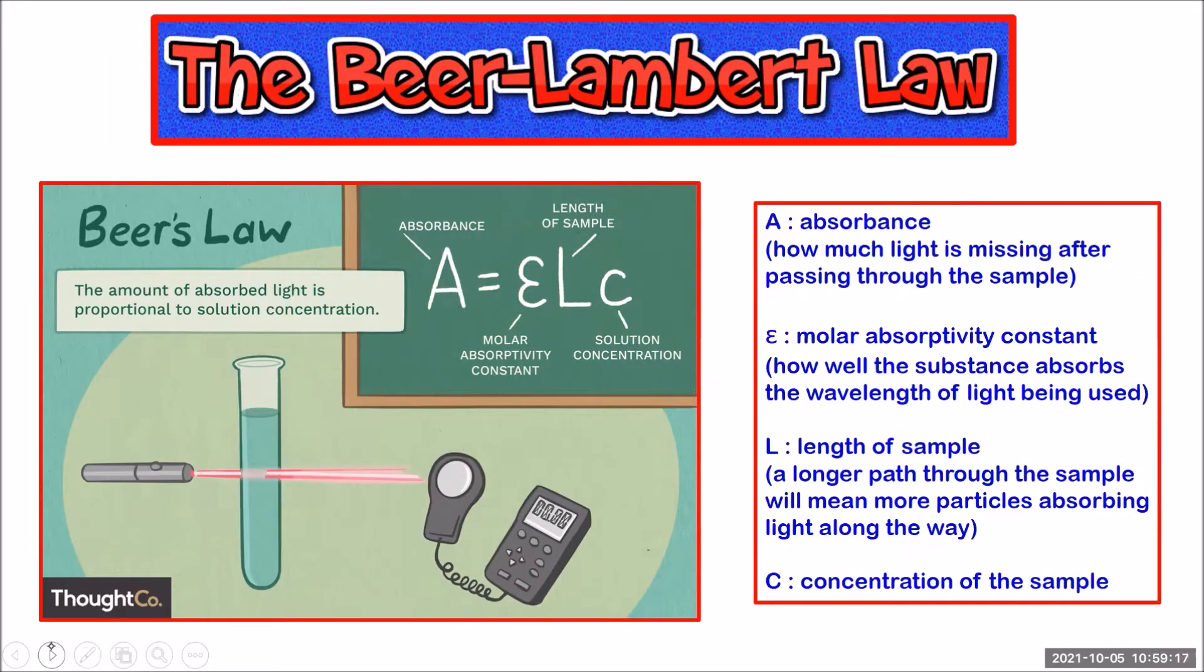The Beer-Lambert law is often just called Beer's law. Now you might be excited about a law about beer, but I can assure you it's not that kind of beer. Basically Beer's law just states that the absorbance of light by a sample is proportional to its concentration. Beer's law actually states that absorbance is equal to εLC. This curly ε is the molar absorptivity constant. L represents the length of the sample. C is the solution concentration. And A is the absorbance.